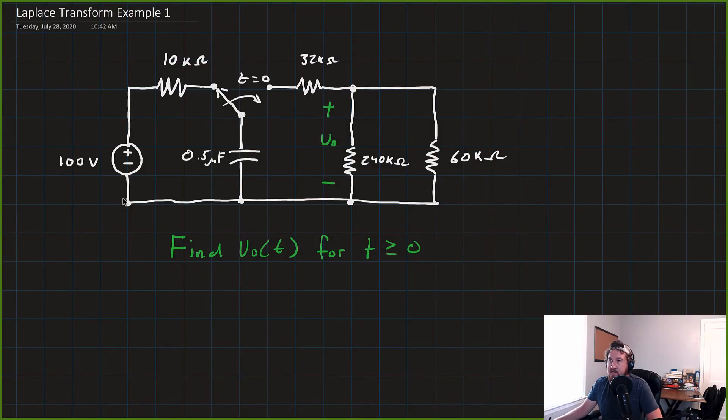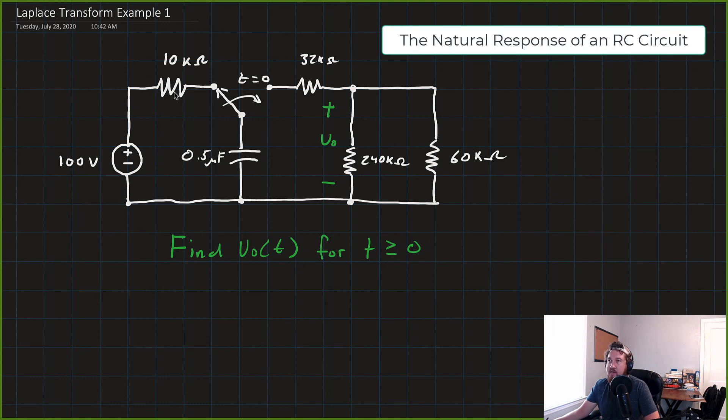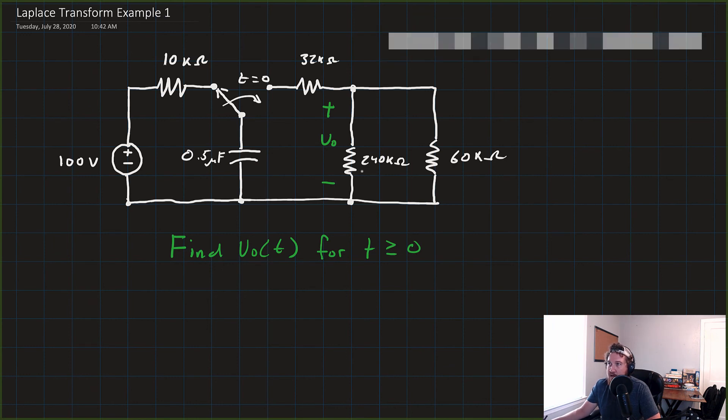In this first example, we're given a circuit with a 100-volt voltage source connected in series to a 10-kilohm resistor, and then there's this switching element here. At T equals zero, the switch goes from connecting to this 0.5 microfarad capacitor over to this right-hand side of the circuit. What we're asked to do is find V₀ as a function of T, which is the voltage drop across this 240-kilohm resistor in parallel with this 60-kilohm resistor.